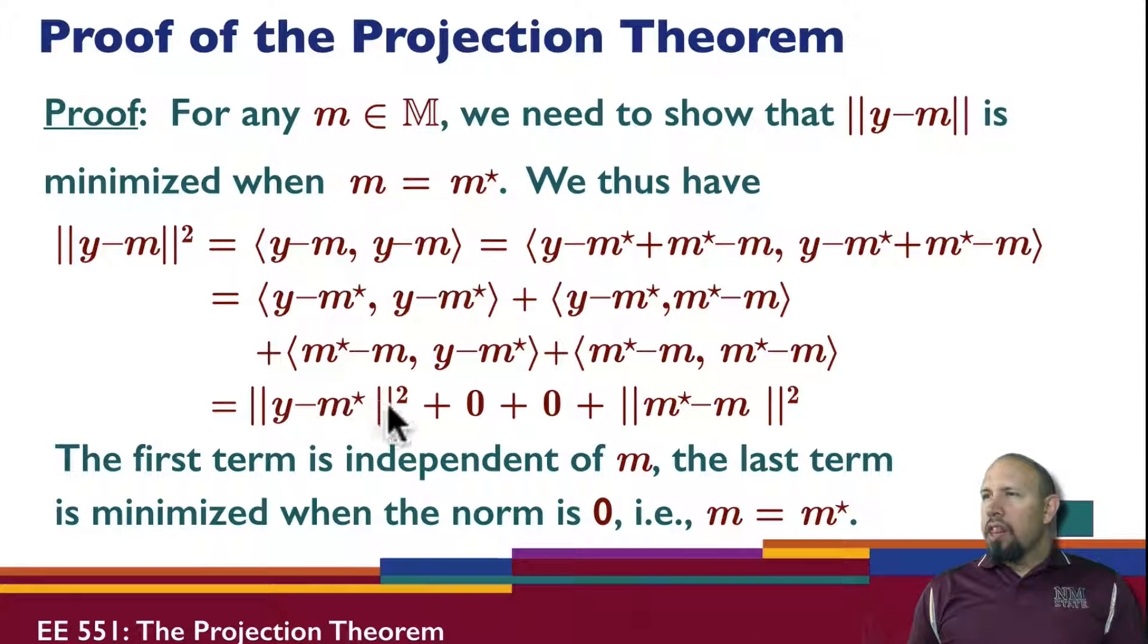And so the smallest that the sum of these two terms can be is when this term is equal to zero. These are two non-negative terms. This one is independent of m. This one is a function of m. This can only be minimized when m is equal to m star.